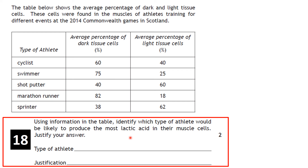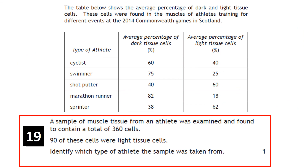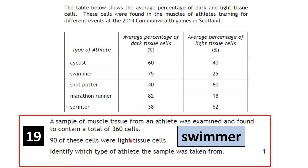Question on muscle tissue: a sample contains 360 cells total, 90 of which are light tissue cells — identify which type of athlete the sample came from. 90 out of 360 is 25%, which corresponds to the swimmer.